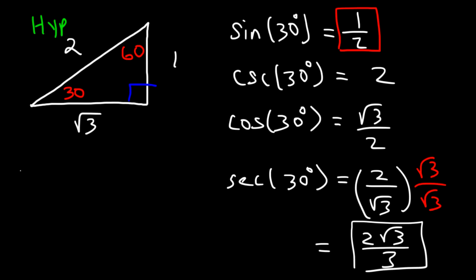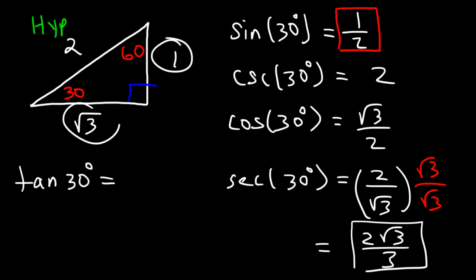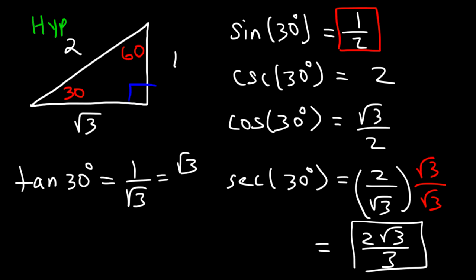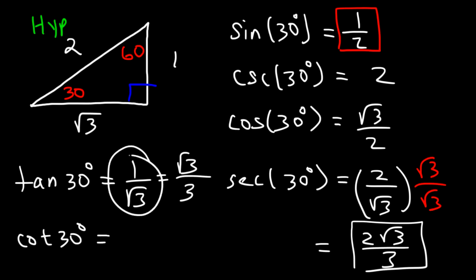If you want to find tangent of 30, that's going to be equal to opposite over adjacent. So it's 1 over square root 3, which when rationalized is going to be root 3 divided by 3. Cotangent of 30 — we need to flip this fraction — so cotangent of 30 is simply square root 3.